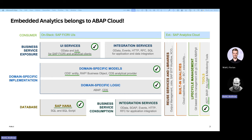Then we come closer to the UI — service exposure. The service exposure also works the same way as in RAP: we have service definition and service binding. The difference is that we are using a different protocol. In the transactional world you use OData; for analytical UIs we are using the INA protocol. INA is information access and is specialized for analytical UIs. You can do things with it like having different aggregation levels alongside a hierarchy with different aggregation types, which is not possible with OData yet.